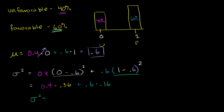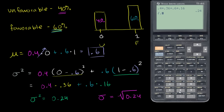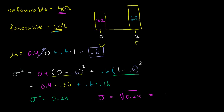The standard deviation of this distribution, which is just the square root of the variance, is the square root of 0.24, which is approximately 0.49. So if you look at this distribution, the mean is 0.6 and the standard deviation is about 0.5. One standard deviation above the mean gets you almost to 1.1, and one standard deviation below gets you right about 0.1. It's hard to have a good intuition for a discrete distribution because you can't take on those in-between values, but it makes sense that the distribution is skewed to the right.